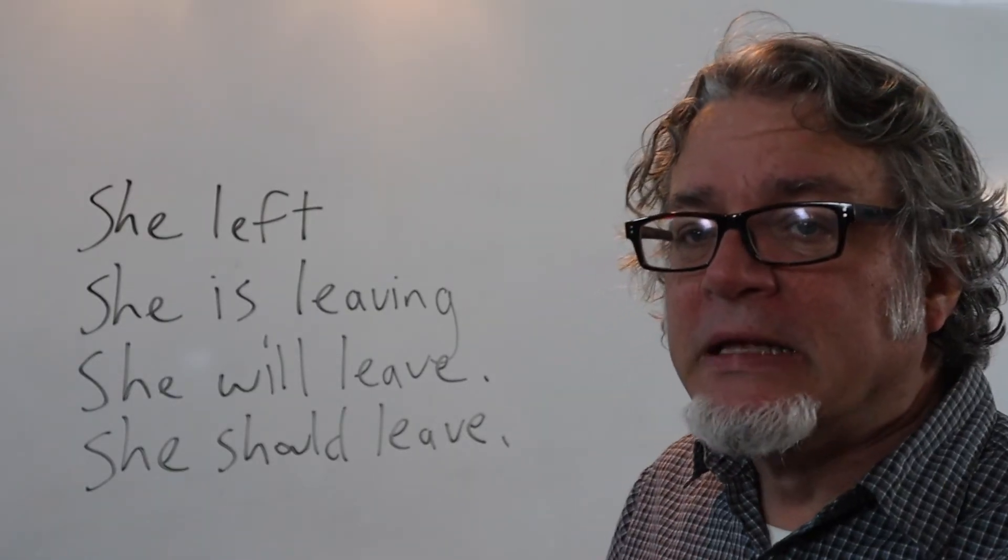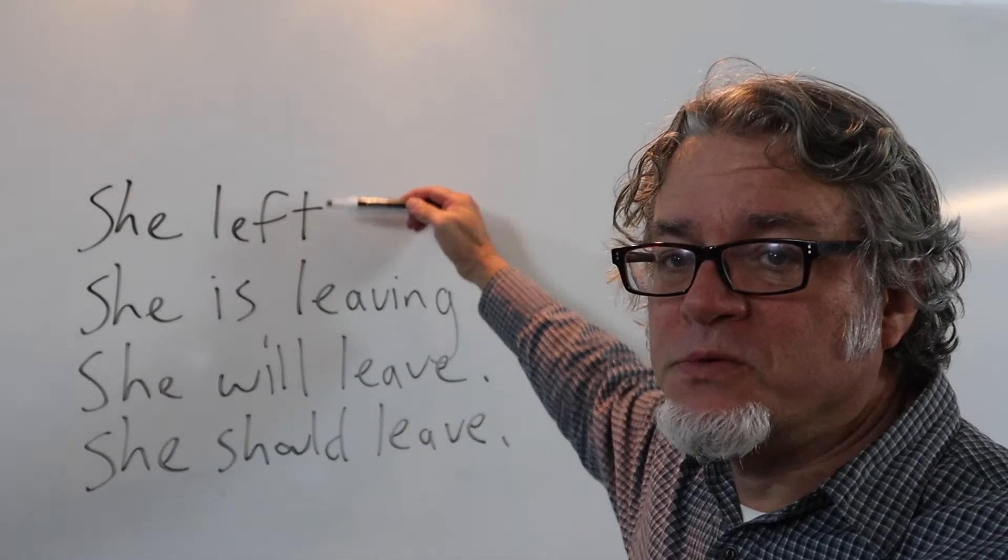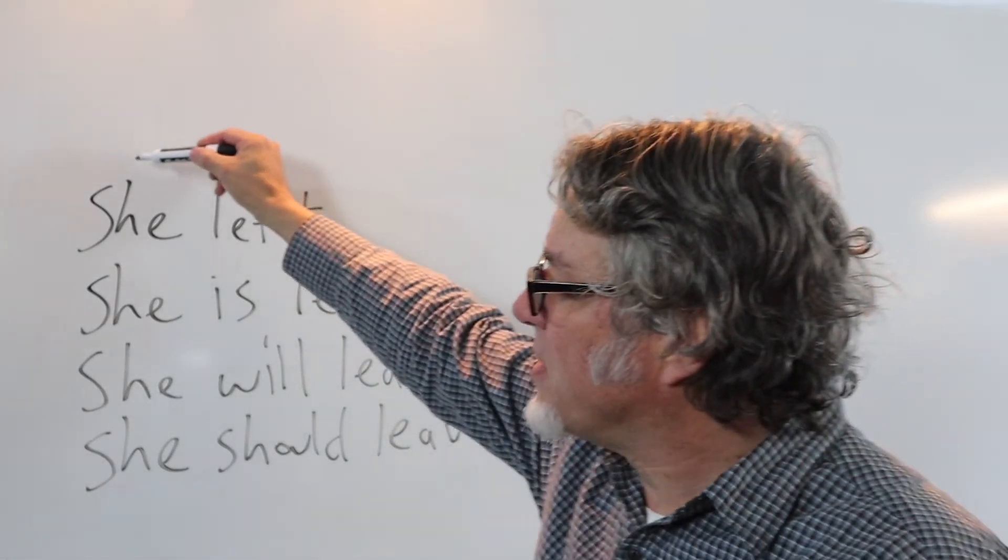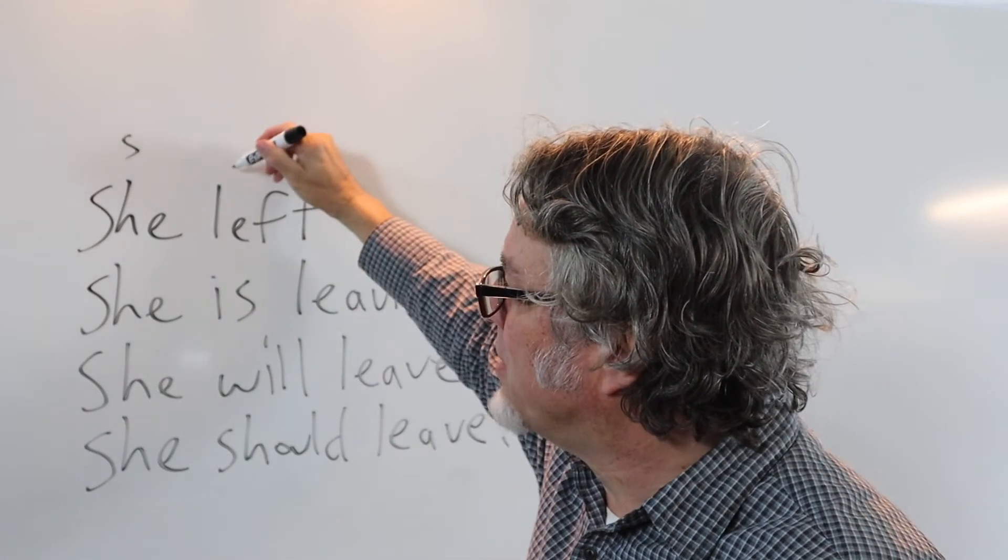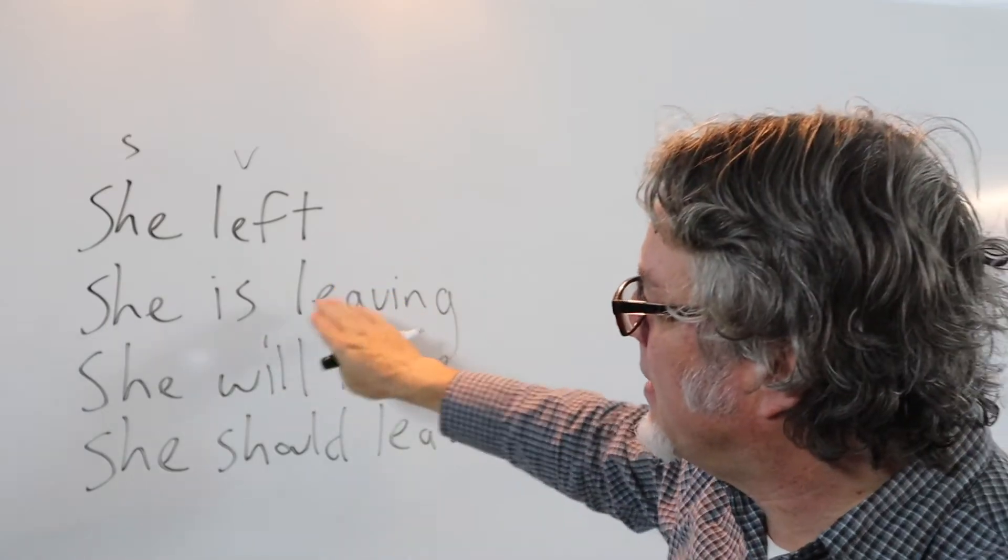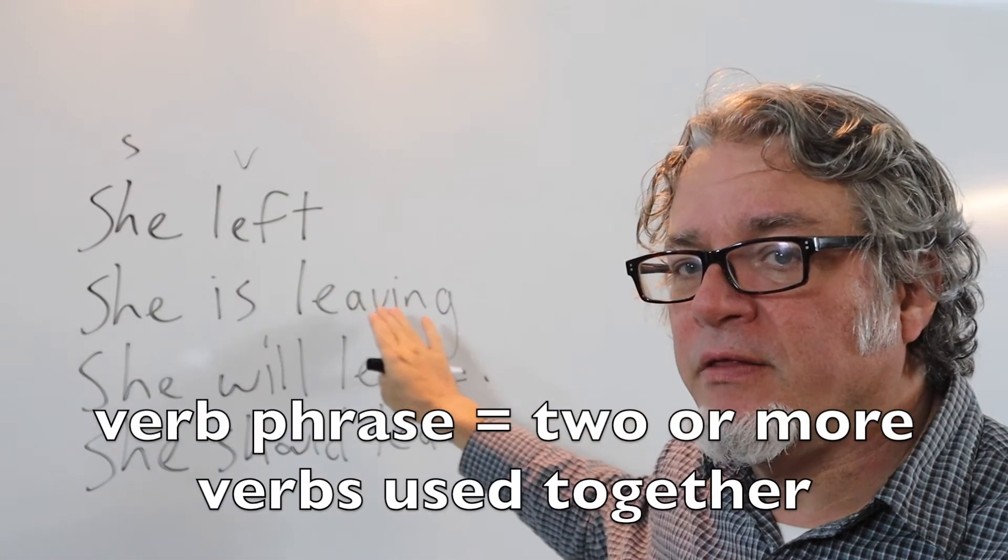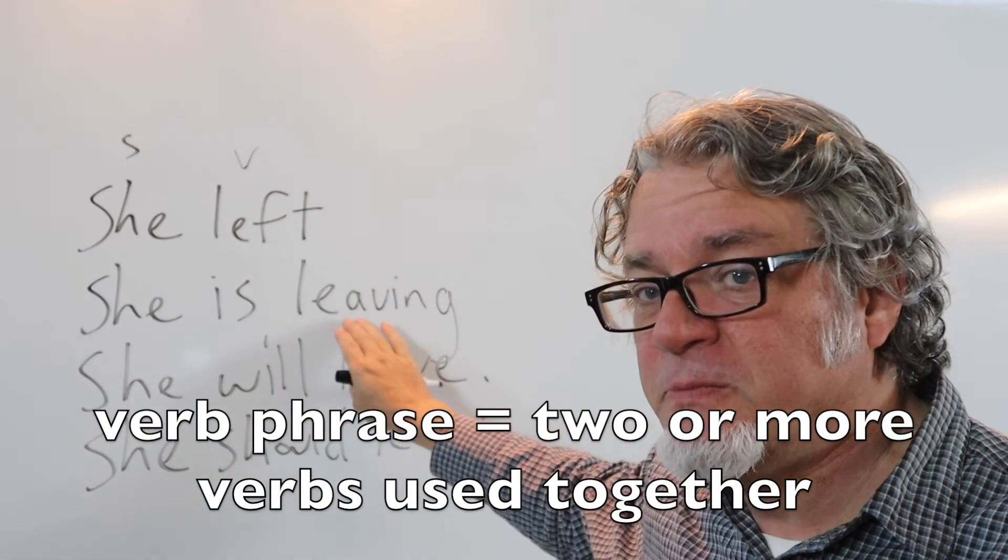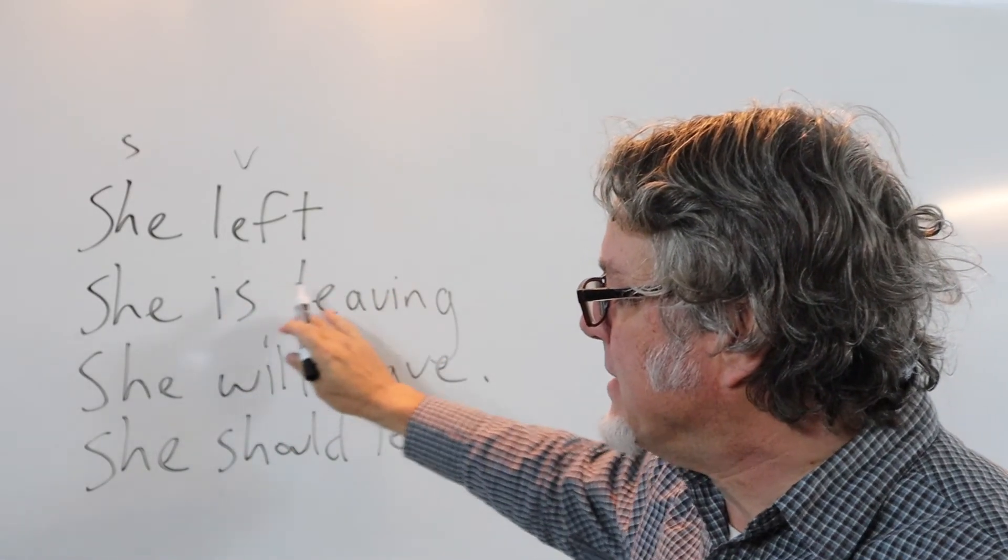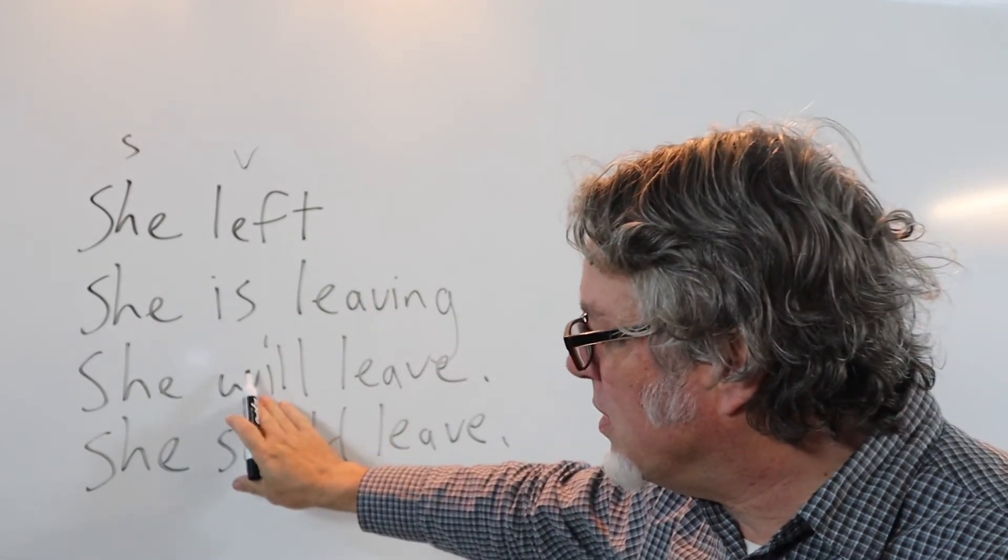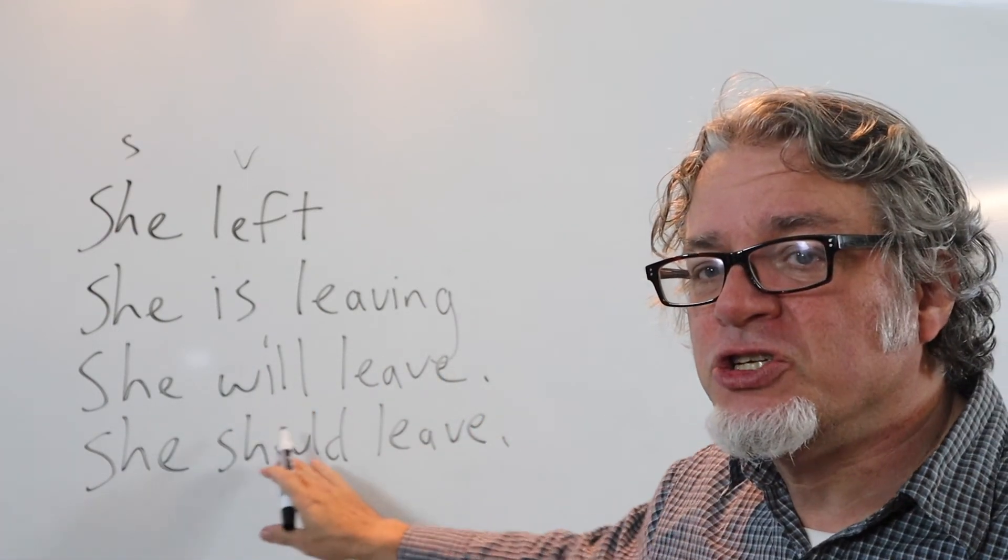Notice that the verb can take many different forms and different tenses. The subject can remain the same, but here's the verb. And then, when you have more than two words in the verb, we call this the verb phrase. She is leaving. She will leave. She should leave.